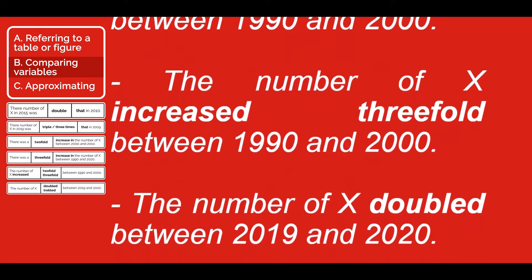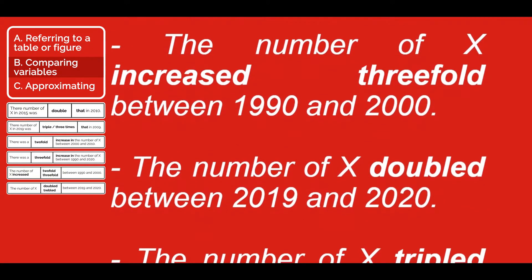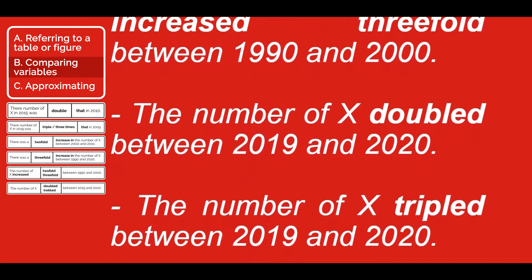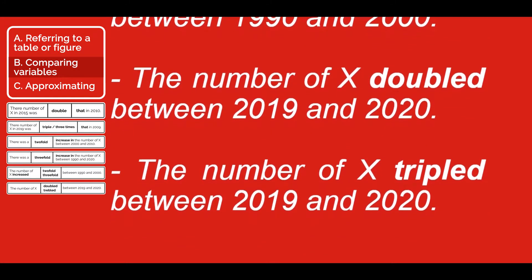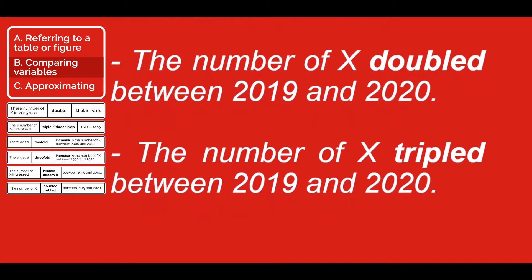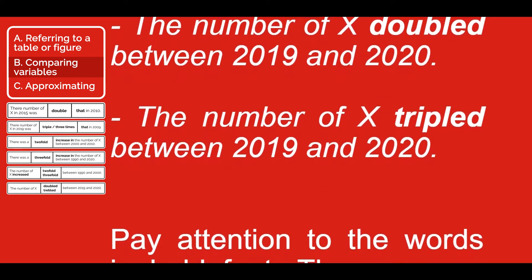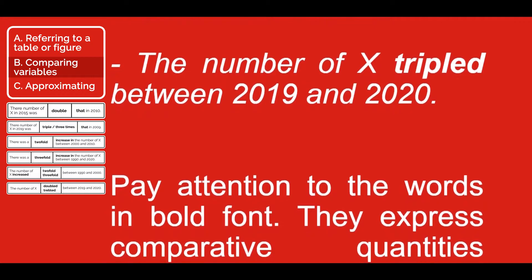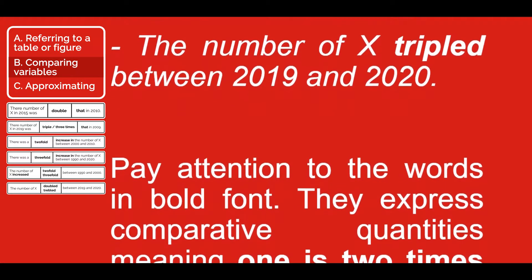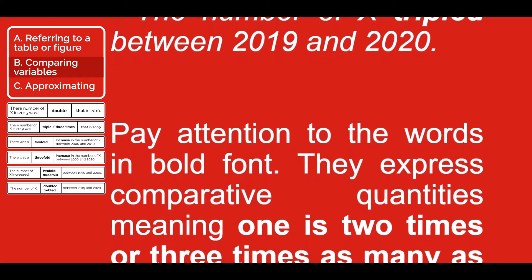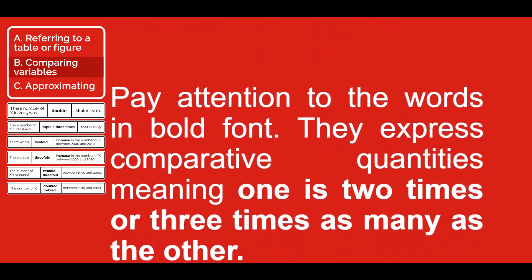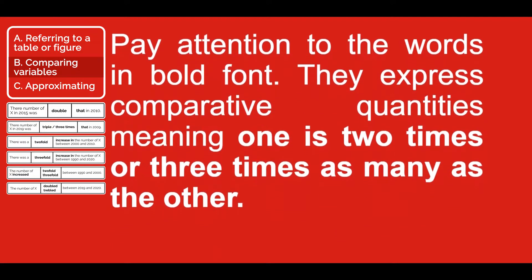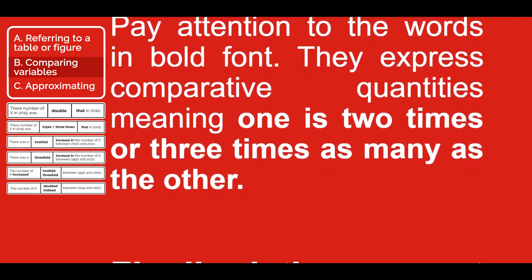The number of x tripled between 2019 and 2020. Pay attention to the words in bold font — they express comparative quantities, meaning one is two times or three times as many as the other.